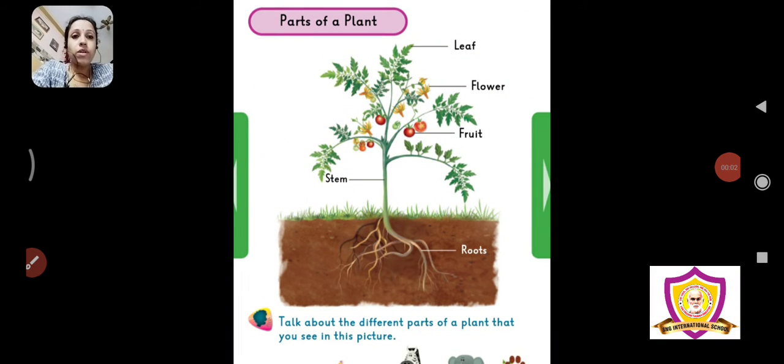Hello children, we are going to learn the parts of the plant. We have learnt about the trees, what are trees, what are herbs, what are plants, what are shrubs.